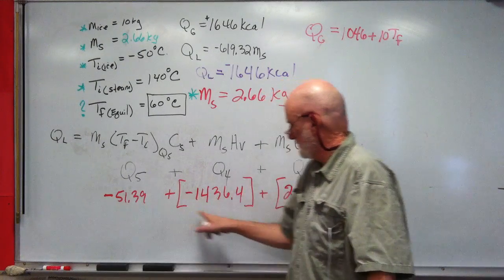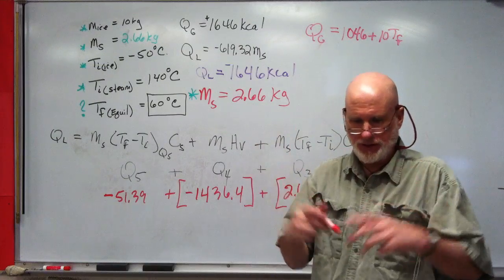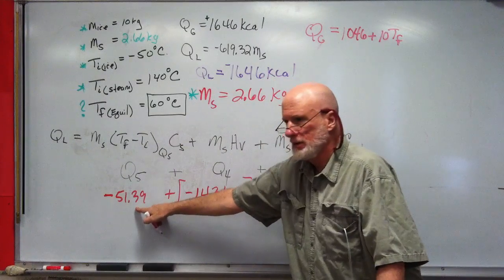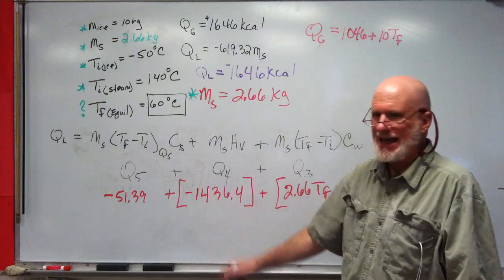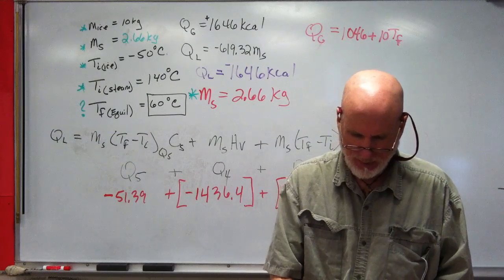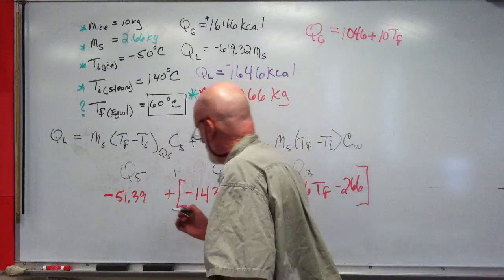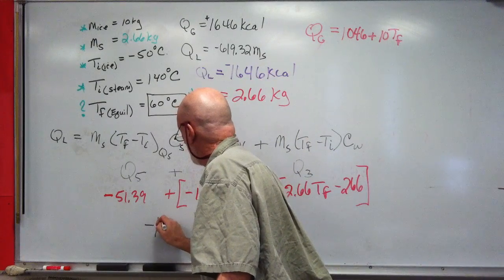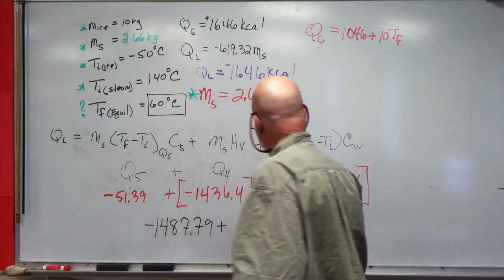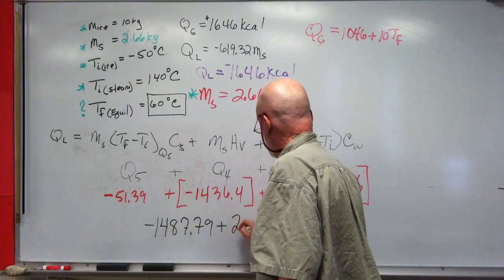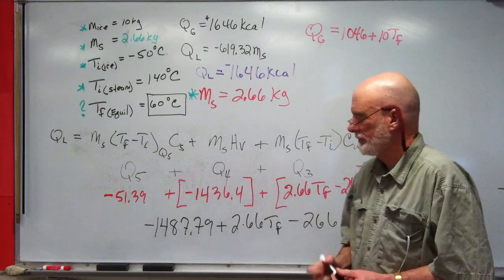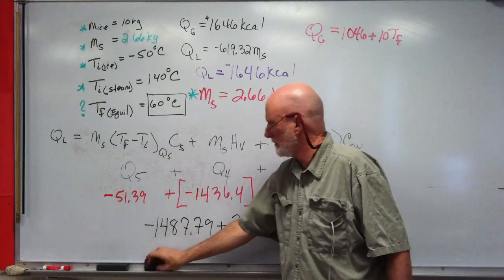Let's rewrite it first. Negative 51.39 and negative 1436.4—what is it? Negative 1487.79, right? Plus 2.66 TF minus 266.